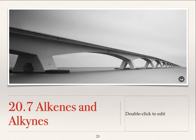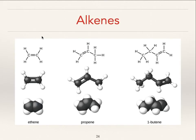Hi guys, welcome back. We're going to take a look at section 20.7 on two different classes of molecules called alkenes and alkynes. Here are alkenes — there are three different examples. The first example is ethene, the second example is propene, and the third example is butene. So what we want to figure out is, based on these pictures, what's an alkene?